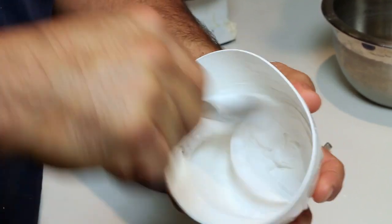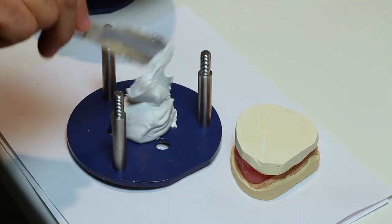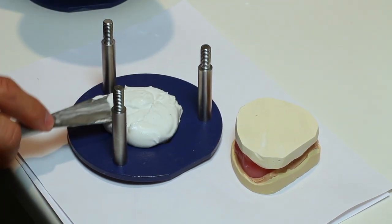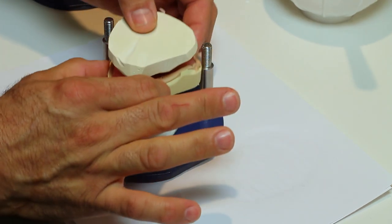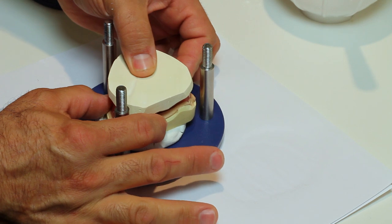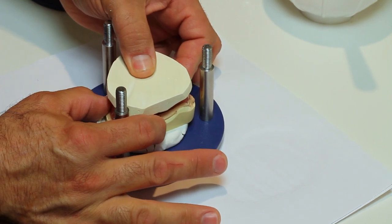Use plaster to mount the denture with poured model on the lower member of the jig. Place plaster into the hole of the lower member of the jig. Place the denture, model, and stone patty onto the plaster, teeth up, model down. Let it set.